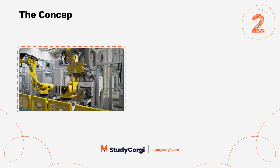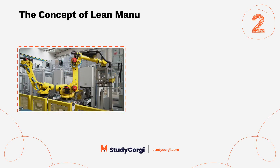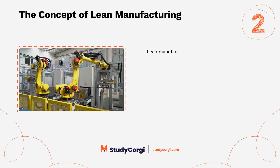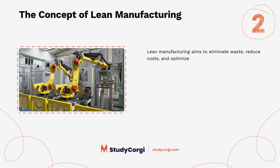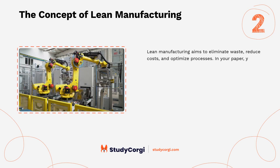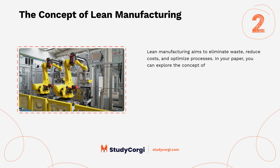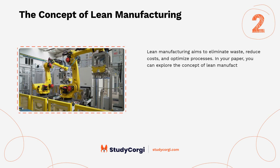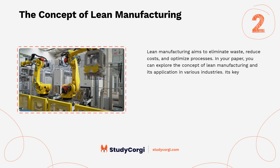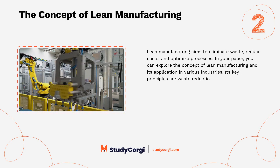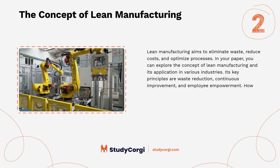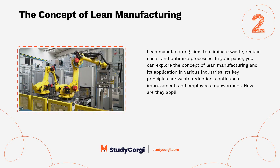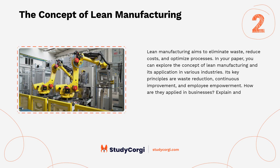The concept of lean manufacturing. Lean manufacturing aims to eliminate waste, reduce costs, and optimize processes. In your paper, you can explore the concept of lean manufacturing and its application in various industries. Its key principles are waste reduction, continuous improvement, and employee empowerment. How are they applied in businesses? Explain and provide examples.